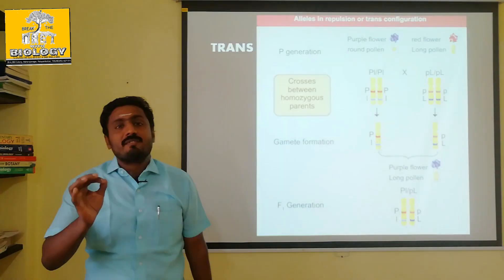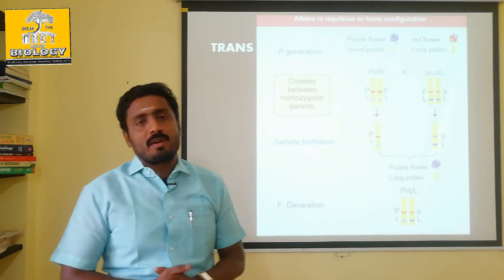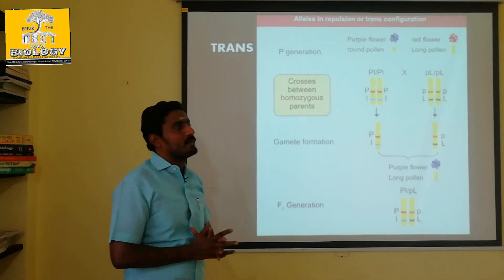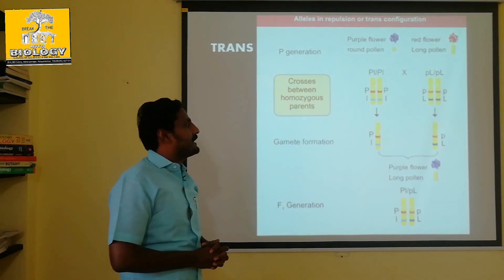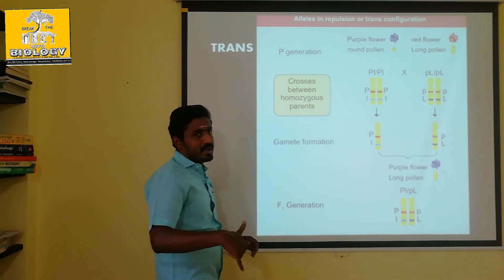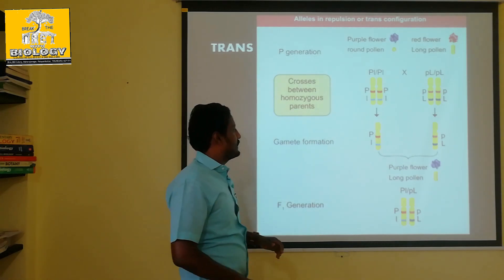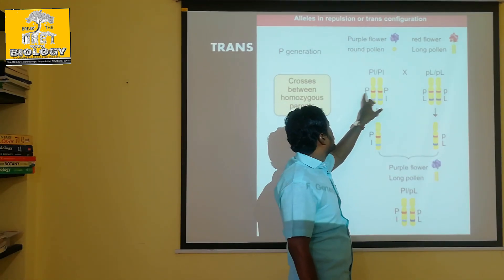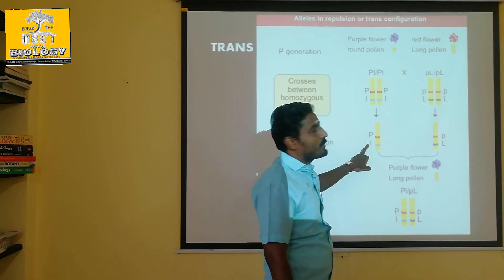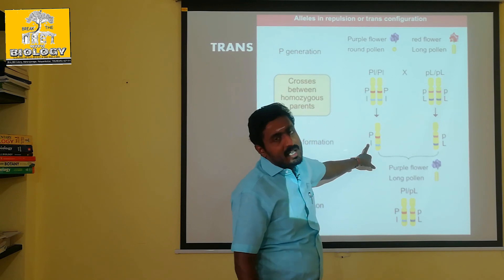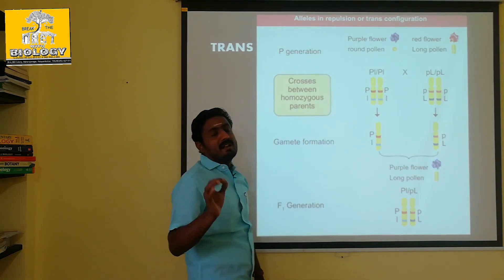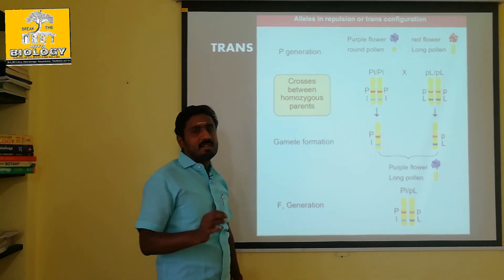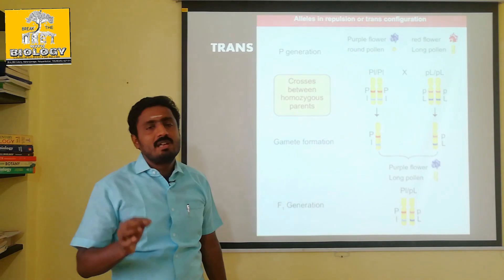In this process, we are going to explain about the alleles. The alleles — we are going to tell you about the alleles, which is called the cis configuration. So, if we are going to form the gametes, capital P, small L — as it is — what are the gametes? What are the alleles?